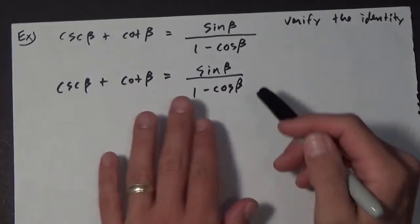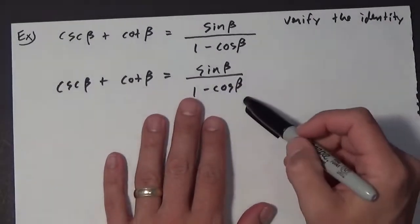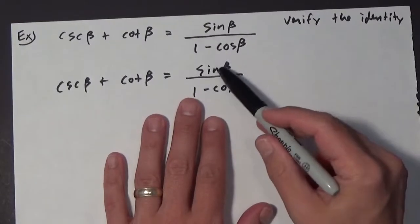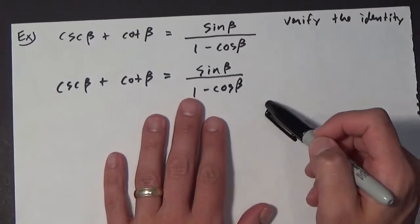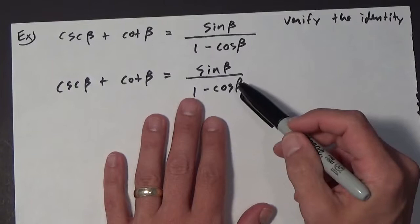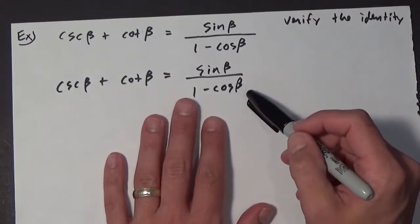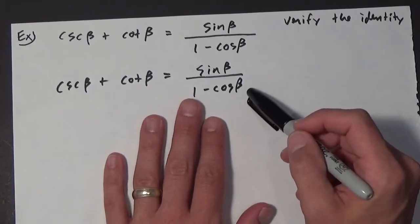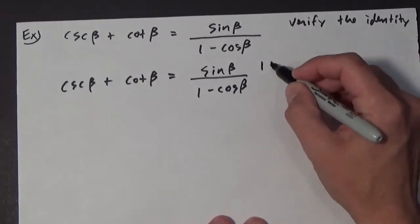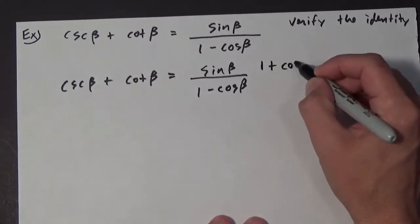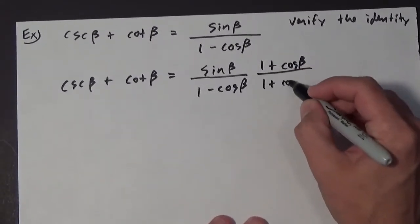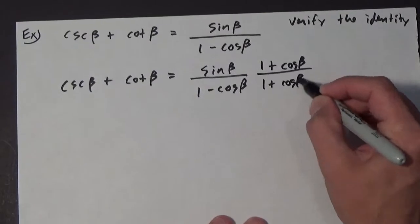We're looking at this thinking, well, I don't know what to do with this one right now. However, we're going to go ahead and multiply by the conjugate. So I'm going to multiply by 1 plus the cosine of beta over 1 plus the cosine of beta.